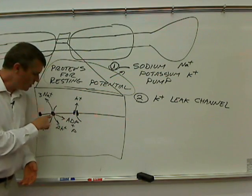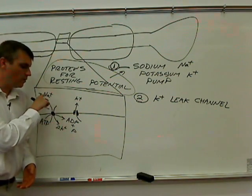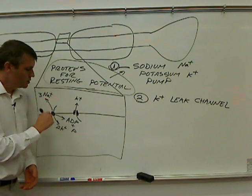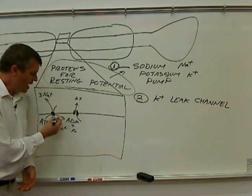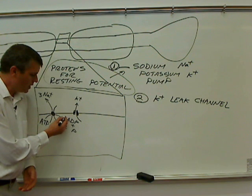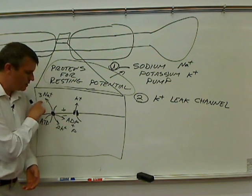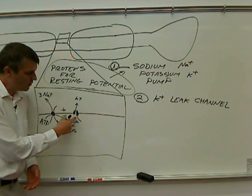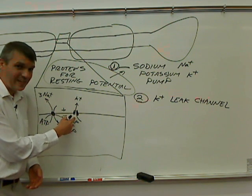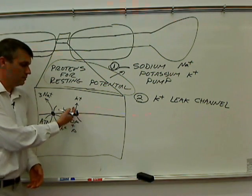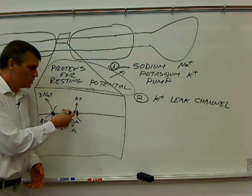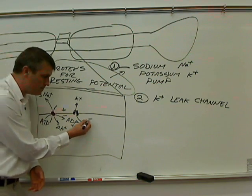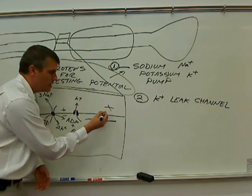So remember the sodium-potassium pump was pumping out more sodium than it's pumping in potassium. So right there we have a charge difference, and that helps to make the inside of the cell more negative, and the outside more positive, because more positive charges are being pumped out. Now we have some of those positive charges that were pumped in. They are just being allowed to leave. So the cell's membrane becomes even more negative on the inside and positive on the outside.